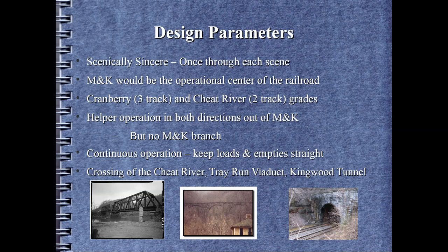Now, let's talk about some of the things that went into the design. Although my basement only scaled out to be a medium space for the curvature I planned to use, based on the classes of steam that I would have to run, I wanted to avoid both a bowl-of-spaghetti track plan as well as a double-deck design. Therefore, once for each scene, scenically sincere would be the rule. Helper service out of MNK up the two-track Cheat River and three-track Cranberry Grades would be featured. The Morgantown and Kingwood branch line, which met the B&O main at MNK, would not be present — not even by a dummy track. Because you cannot fake loads and empties with open-top hoppers, the design would have to be continuous operation: loads east, empties west. The main line could not loop back on itself. The crossing of the Cheat River and the full four-arch Tray Run Viaduct would be signature scenes. The eastern portal to the Kingwood Tunnel in Tunnelton would mark the westward end of the run. As the final design turned out, Tray Run could be represented two-thirds full-scale length — most impressive in O scale.